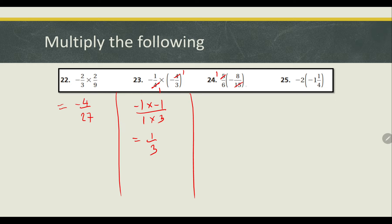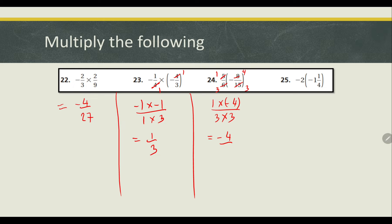In this one, 5 will change to 1, 15 will change to 3, 6 will change to 3, and 8 will change to 4. So we have 1 times negative 4 over 3 times 3, and our answer is negative 4 over 9.